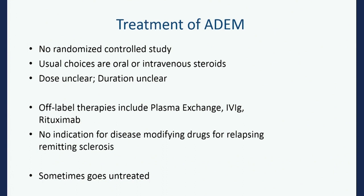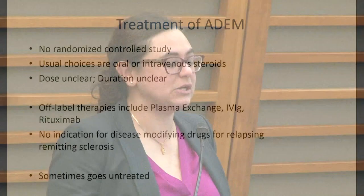There are off-label therapies — by definition everything is off FDA label. Plasma exchange, IVIG, and rituximab are used. There's no indication for MS drugs. There is a fraction of ADEM patients who go entirely without any medical treatment, and it's not clear if they do worse.